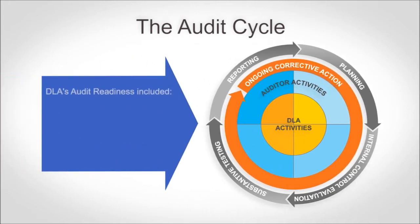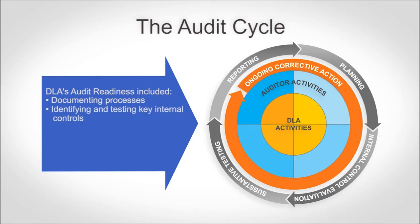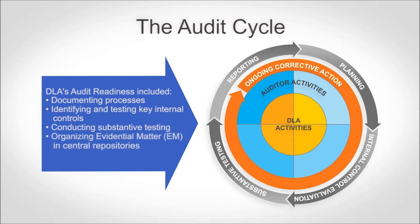DLA has been preparing to be audited for several years. Our preparation included documenting our processes, identifying and testing key internal controls, conducting substantive testing, and organizing evidential matter in central repositories. By doing this, we now understand our processes and controls and have been able to correct deficiencies. These audit readiness activities help DLA mitigate risk by enhancing accuracy and reliability of our financial data and protecting resources against waste, fraud, and abuse. Where weaknesses have been identified, DLA is developing and implementing corrective actions to ensure internal controls are operating as planned.